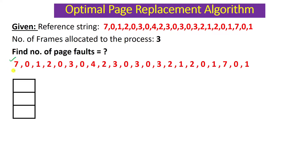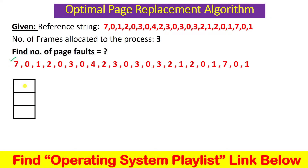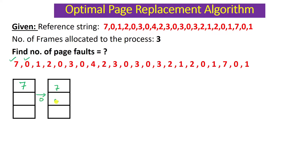First, the CPU is asking for page number 7. Initially all the frames are empty, so 7 is not present in any frame — it will generate a page fault. I will write a tick for the page fault. Seven is placed in the first frame. Next page is 0 — it is not here, so it generates a page fault and is placed in the next free frame. Then page 1 again generates a page fault. So frames now contain: 7, 0, 1. Everything is the same up to this point in every other algorithm as well.